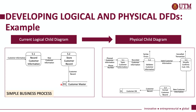Whereas in the physical child diagram, the processes expand from two processes in the logical child diagram to four processes in the physical child diagram, with each process becoming more detailed. Process 5.1 shows that we need to type in the customer information. Process 5.2 requires us to validate the customer information — a validation process is included here, which also shows what happens if there are errors during validation.